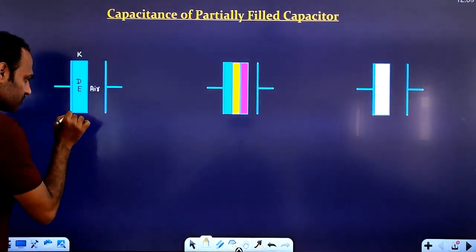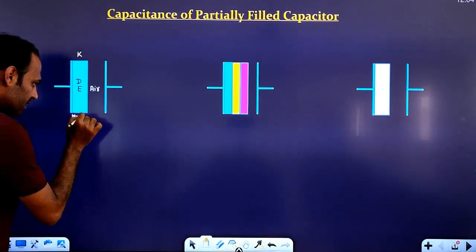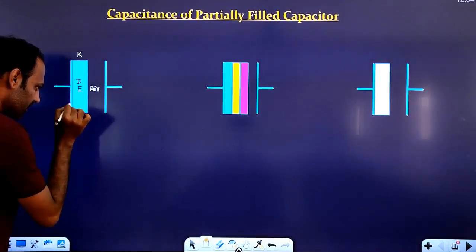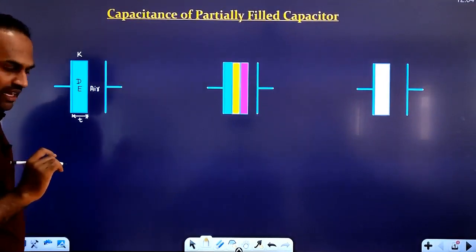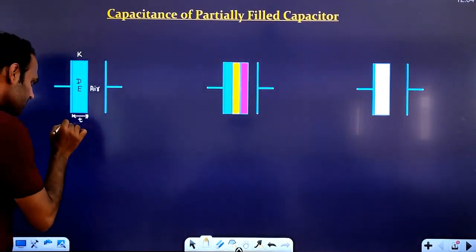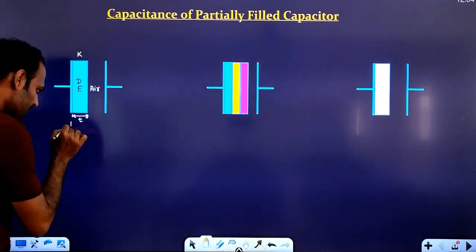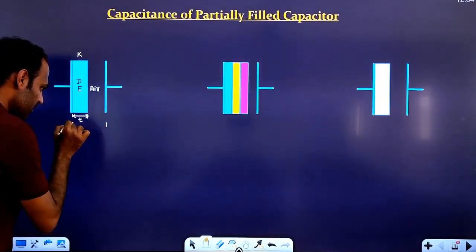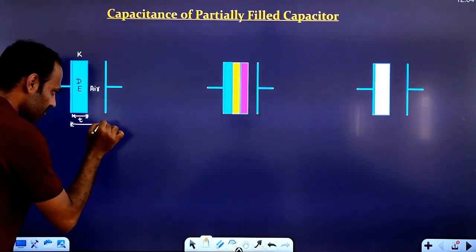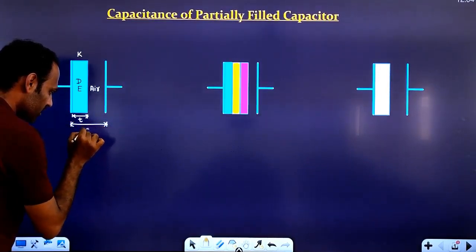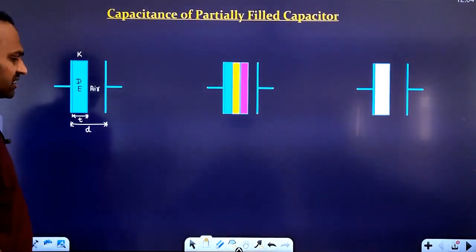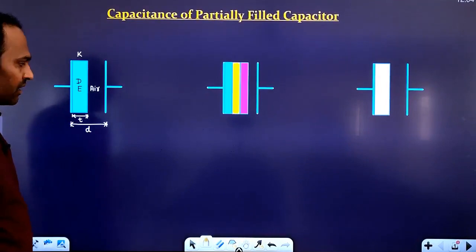Let the thickness of this dielectric material be T. The distance between the plates we name as D. So the distance between the plates is D.